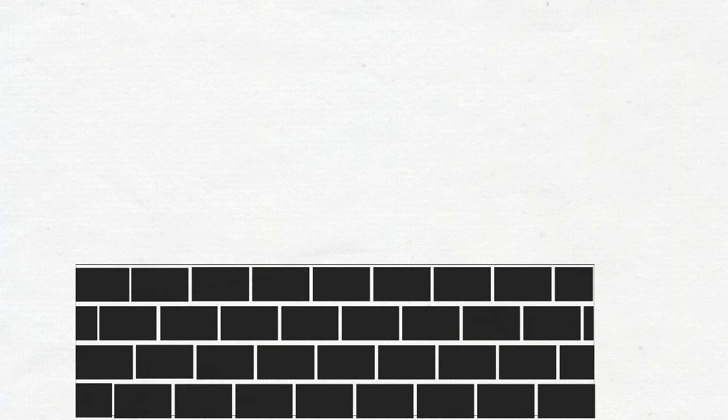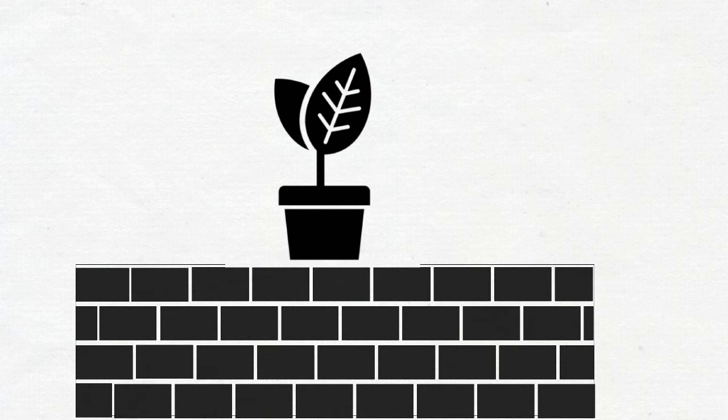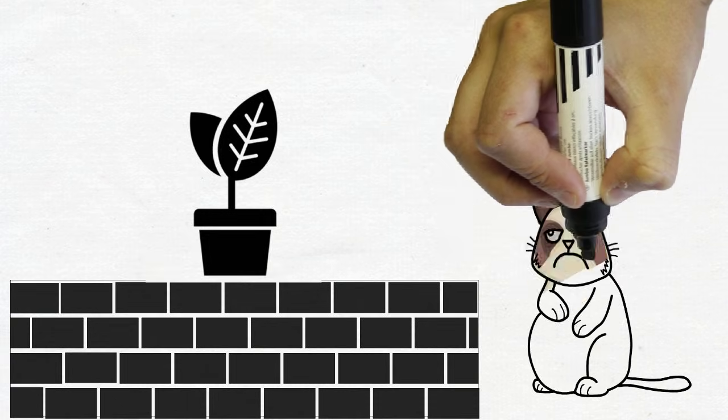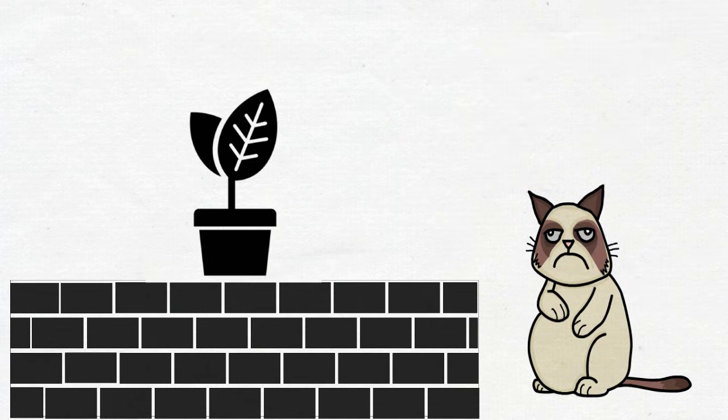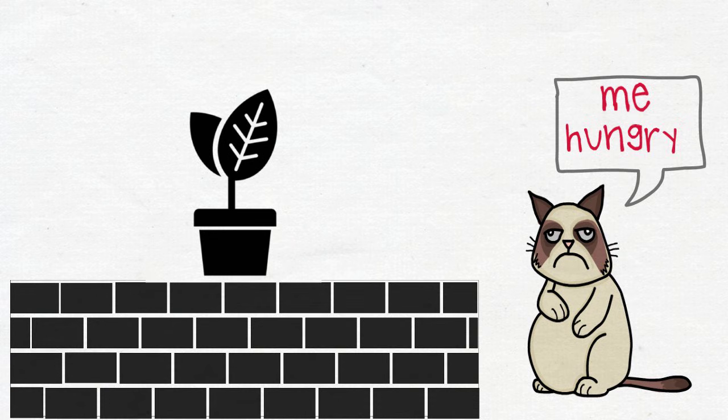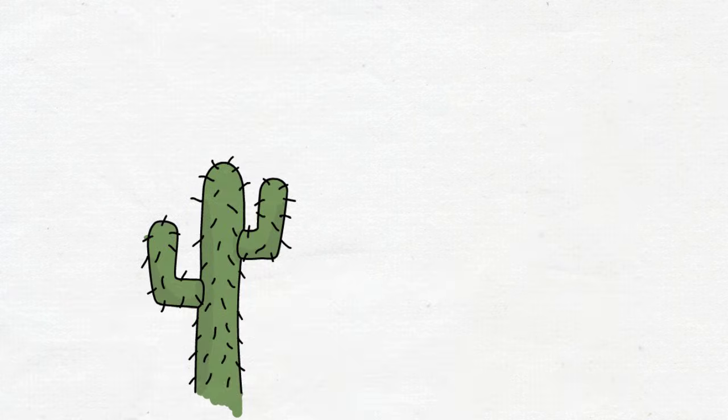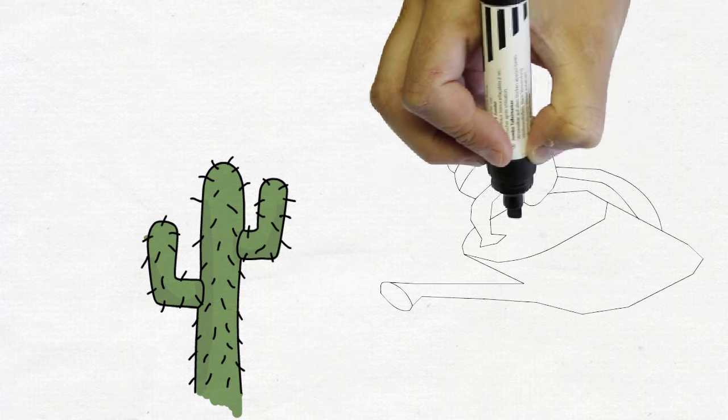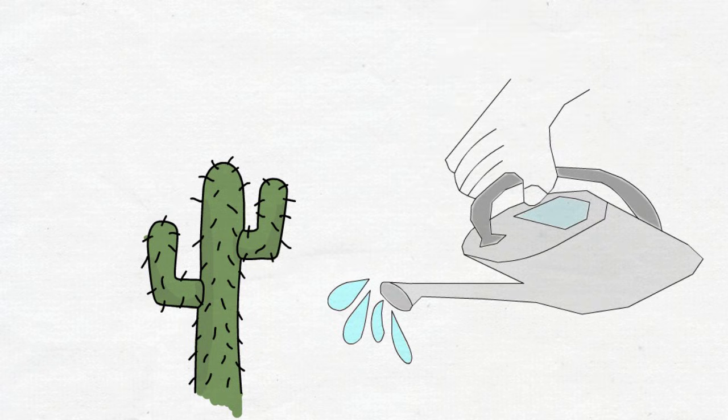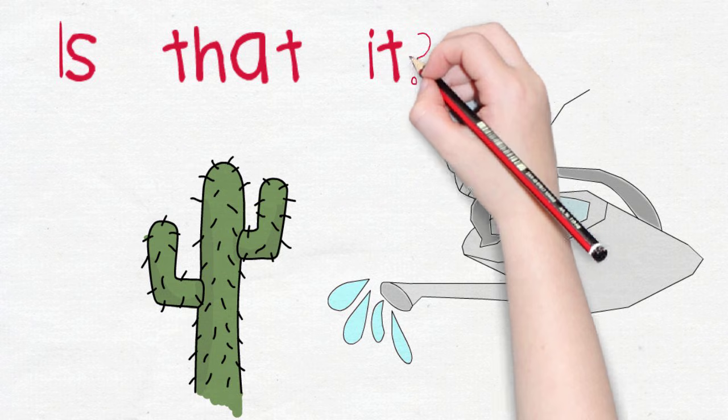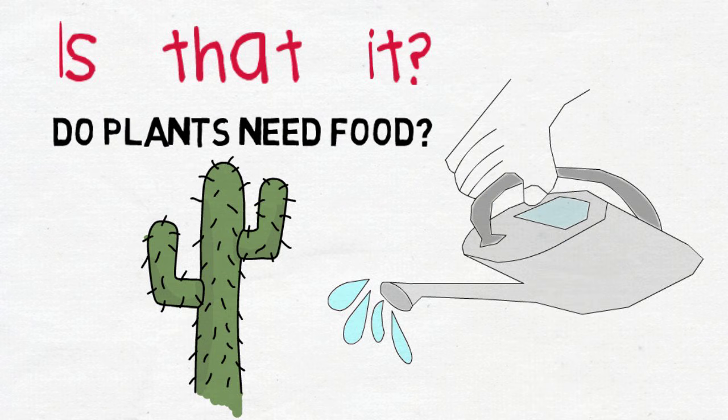Pay attention for a moment to that plant in your balcony. Unlike your cat, it does not walk around requesting, or rather demanding, food. Your plant is happy with the water you give it. But is that all a plant needs to survive? Water? Does a plant need food?